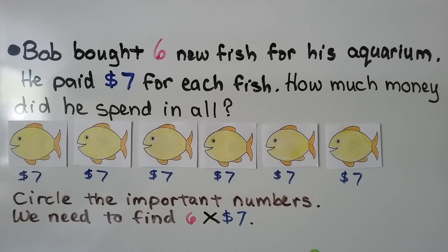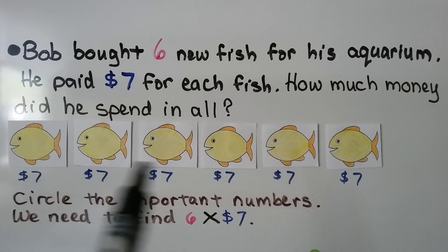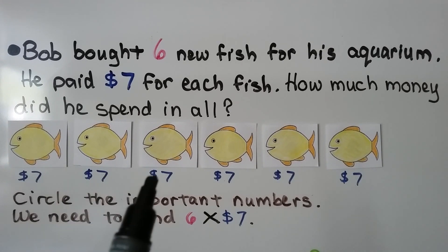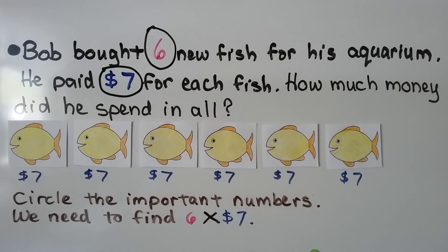Bob bought 6 new fish for his aquarium. He paid $7 for each fish. How much money did he spend in all? So we've got 6 fish and they each cost $7. We can circle the important numbers — how many fish he bought and how much he paid. We need to find 6 times $7.